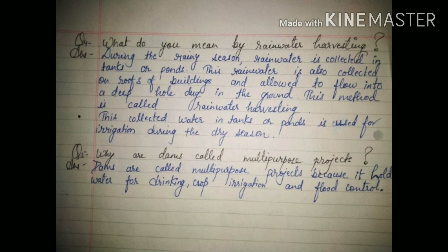Question four: what do you mean by rainwater harvesting? Answer: during the rainy season, rainwater is collected in tanks or ponds and conserved for use during the dry season when there is no water. Rainwater is also collected on rooftops of buildings and allowed to flow into a deep hole dug in the ground. This complete method is called rainwater harvesting.